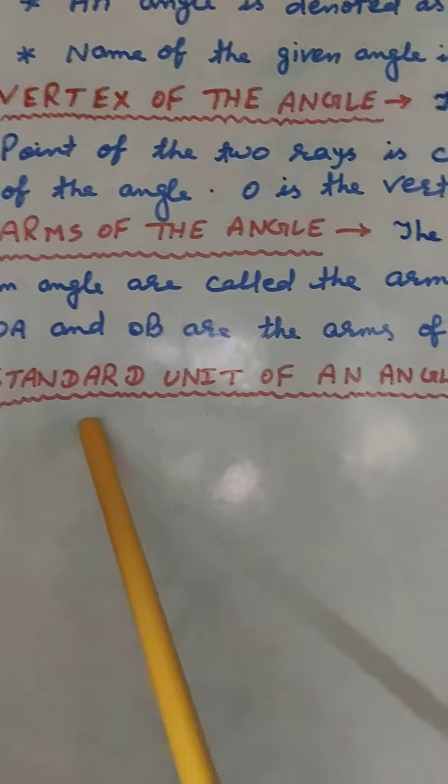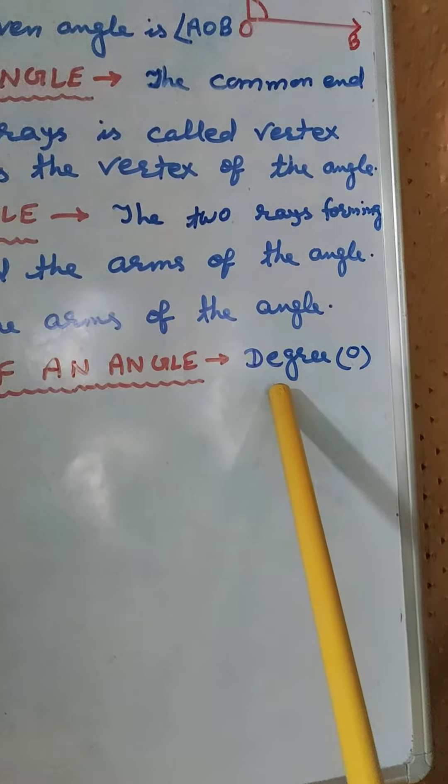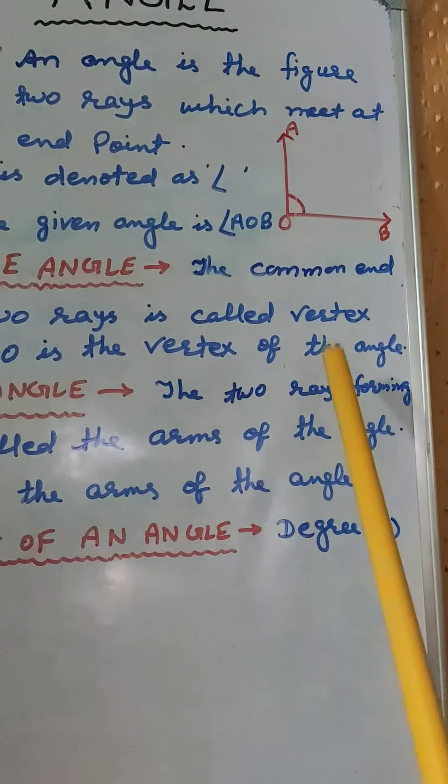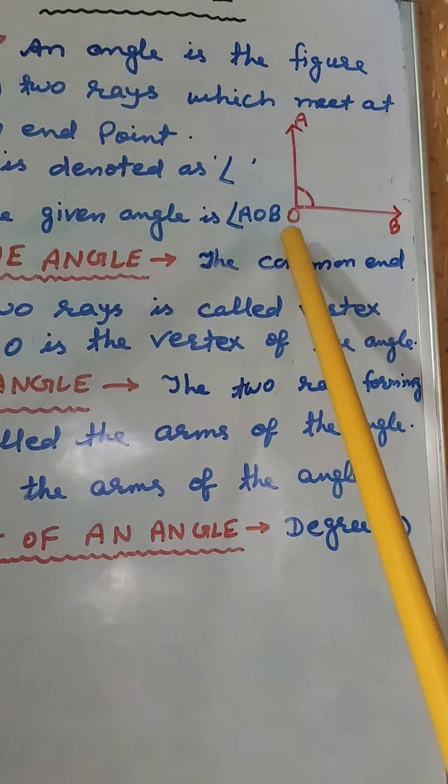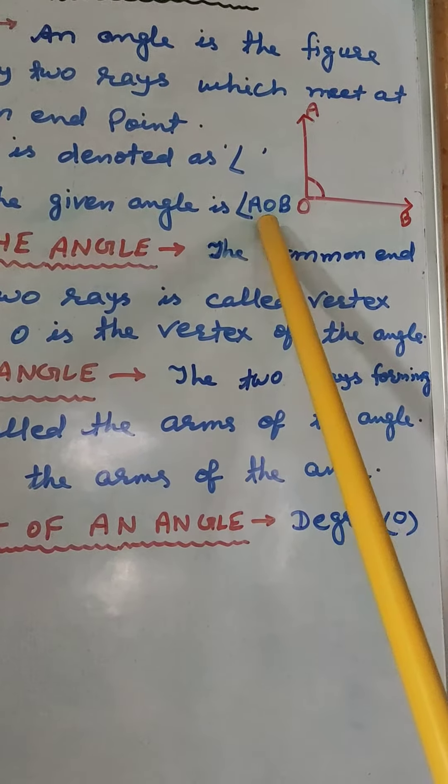And standard unit of an angle that is degree. We should write degree like this. When we write the name of any angle we should write the vertex at the middle. That is angle AOB.